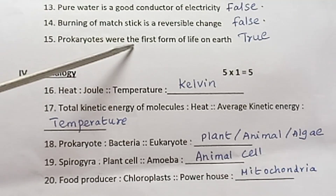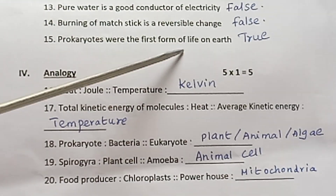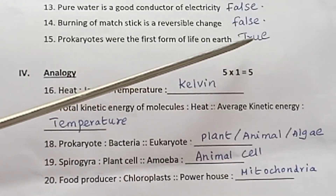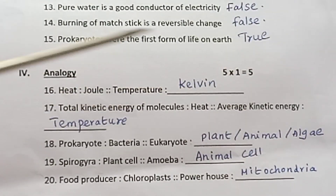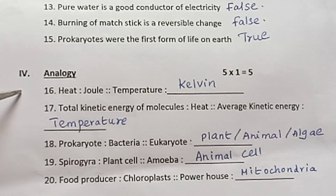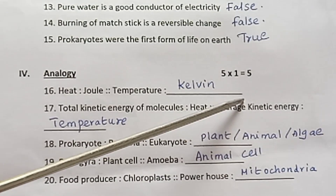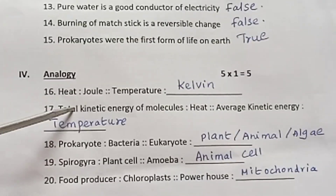Question 15: Prokaryotes were the first form of life on Earth — True. Roman numeral IV: Analogy. 5 into 1 is equal to 5.